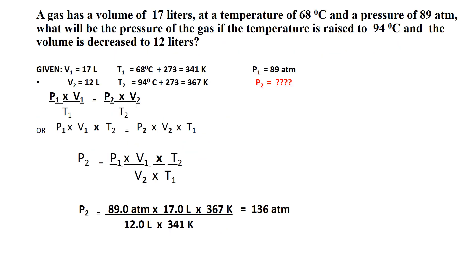Problem 3: A gas has a volume of 17 liters at a temperature of 68 degrees Celsius and a pressure of 89 atmospheres. What will the pressure P2 be if the temperature is raised to 94 degrees Celsius (T2) and the volume is decreased to 12 liters (V2)? Remember, T1 and T2 must both be converted to Kelvin. This is the equation for P2.